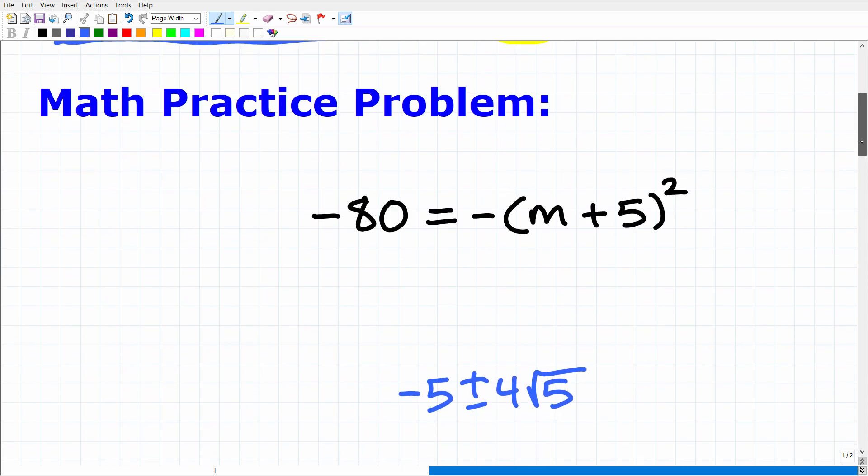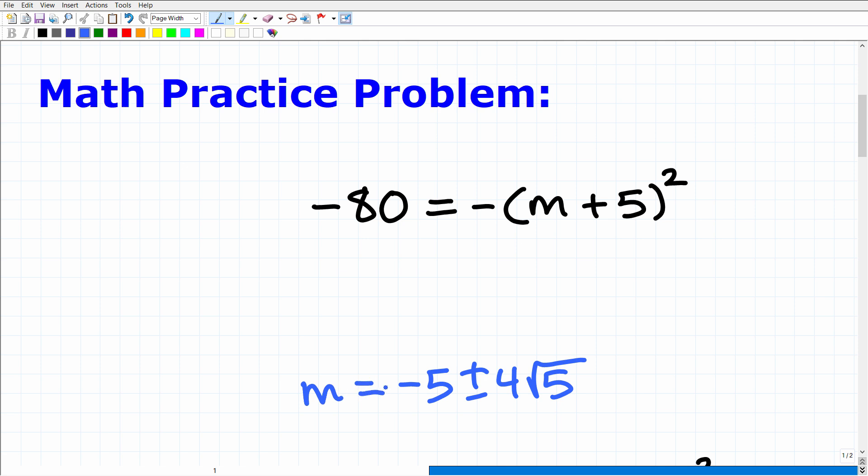Let's go take a look at the actual solution. If you did this correctly, m would be equal to -5 ± 4√5. That is the answer. Now if you got this correct, that is fantastic. That indicates that you're pretty familiar with solving quadratic equations. But this is only one tiny portion of the stuff that you're going to need to know for the FTCE 5 through 9 exam.